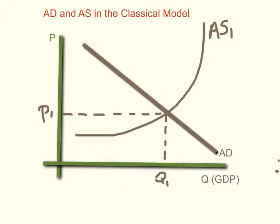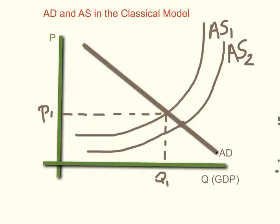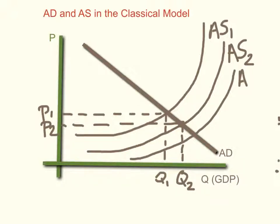What those supply-side policies would do is actually increase the aggregate supply. So if we start with AS1 here in this graph and go to AS2, we would see the equilibrium point increase to a higher quantity or higher GDP — here's Q2 — and we'd actually have a lower price level, shifting to P2. If we shift it even more a few years later, in this more long-term view, we would have AS3 and so forth, and GDP would keep increasing to higher levels with lower price levels and lower inflation. So you would have the best of both worlds — higher GDP and no increases in government spending, so no long-term problems like national debt.